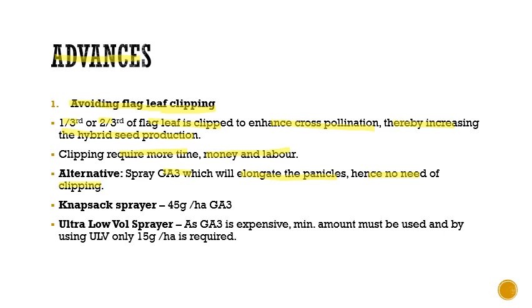If the panicles can elongate beyond a point, it can directly enhance cross pollination, saving time and labor. GA3 can be sprayed using a knapsack sprayer, which requires 45 grams per hectare. Alternatively, we can use an ultra low volume sprayer. Since GA3 is very expensive, the ultra low volume sprayer requires only a minimum amount — just 15 grams per hectare.